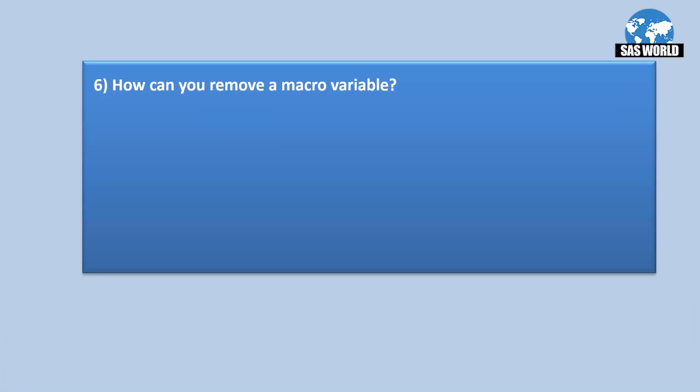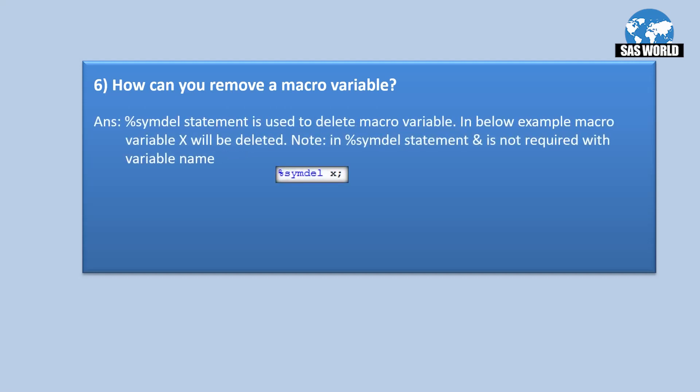How can you remove a macro variable? You can use the %SYMDEL statement. Simply write %SYMDEL followed by the name of the macro variable. When you specify the variable name, do not put an ampersand sign.